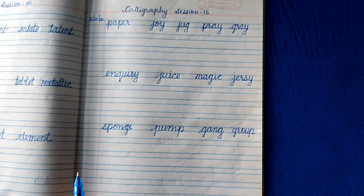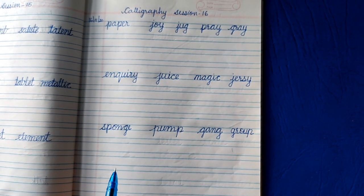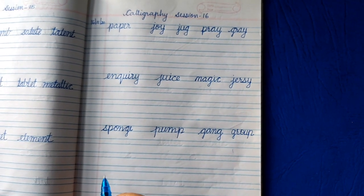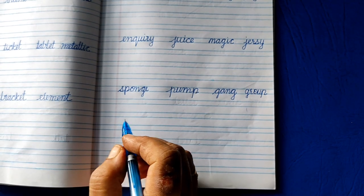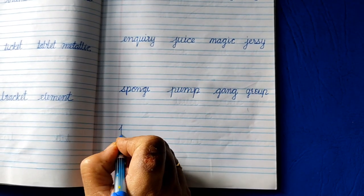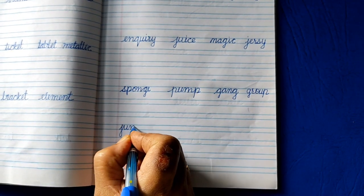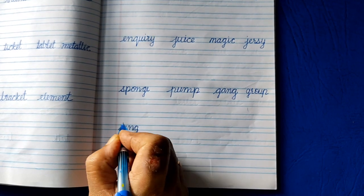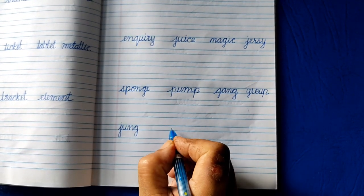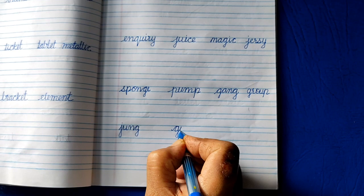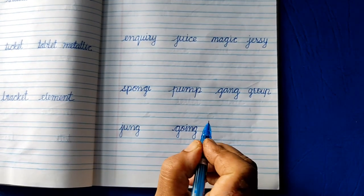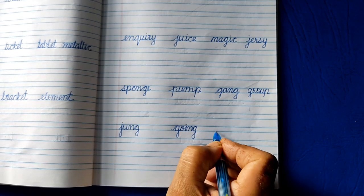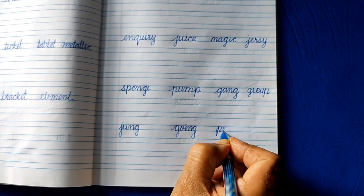Next three lines again. J-U-N-G, chunk. G-O-I-N-G, going. Next, P-E-N.